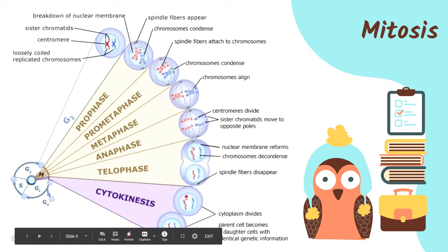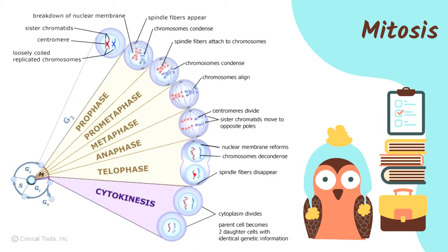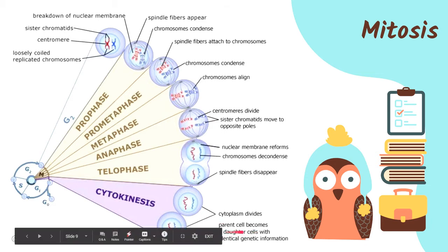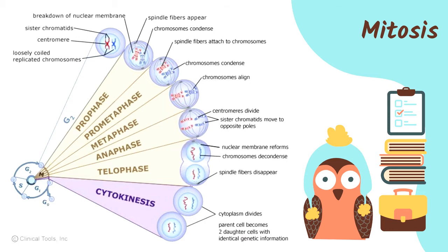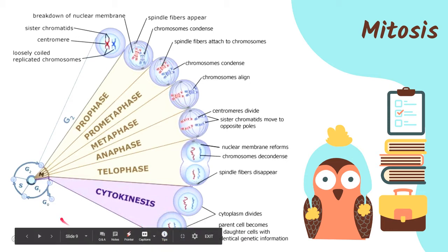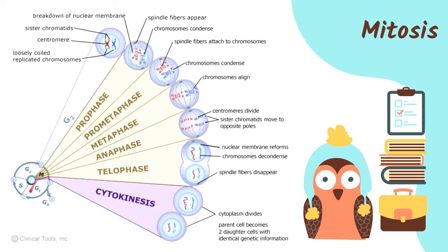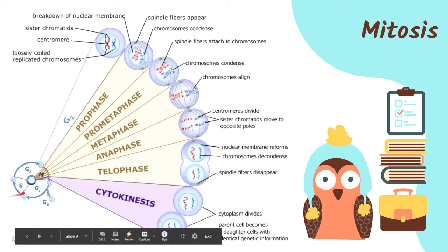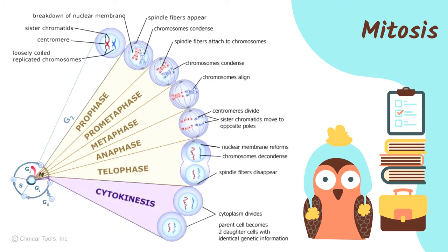During cytokinesis, now that there are two nuclei, the cytoplasm divides and then the cell membrane divides. The product is two daughter cells with the same identical genetic information as the parent cell. Each daughter cell will then undergo Gap 1 — where it grows in size — then S phase where DNA material is duplicated, then Gap 2 to prepare for cell division, and then it will enter prophase again.